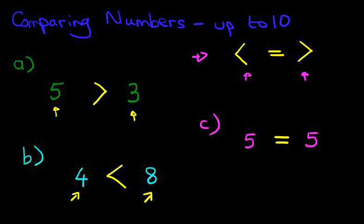So that is one way of comparing numbers up to 10. All you do is simply count upwards. The first number that you come to is the smaller number. And then make sure the arrow is pointing at the smaller number.